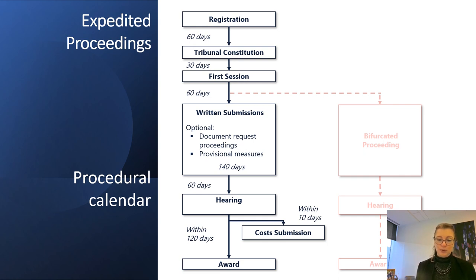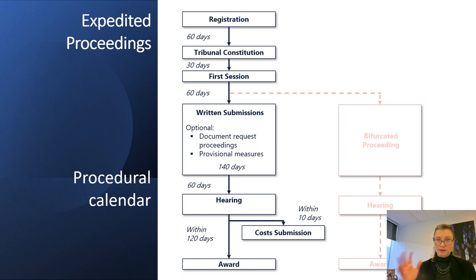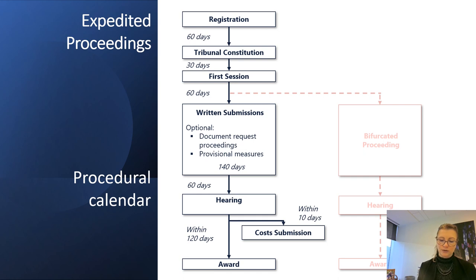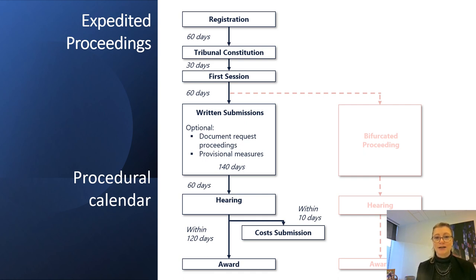The procedure calendar in expedited arbitration has no bifurcation available, so everything proceeds in one phase. You could still have document production and provisional measures but on a faster track. Arbitration Rule 81 in particular provides for page limits for the parties' main submissions — 200 pages for the first round and 100 for the second round. The award has to be rendered within 120 days. It's not as fast as a commercial arbitration fast-track proceeding, but it is a very reasonable length for an investment arbitration.